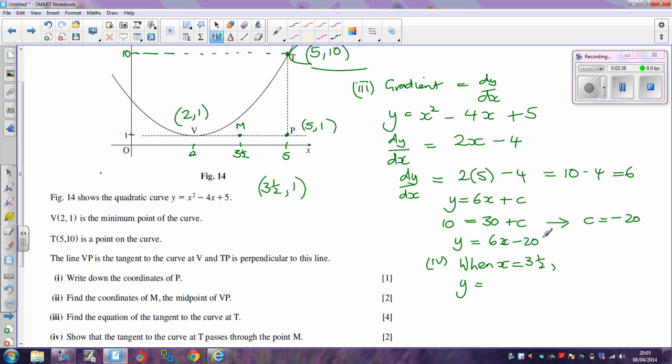Well y is going to equal, using this equation here, 6 times 3.5 take away 20. Well 6 times 3.5, that's 21. 21 take away 20 is equal to 1. So when x is 3.5, y is equal to 1. That gives us the correct point, therefore t passes through M.